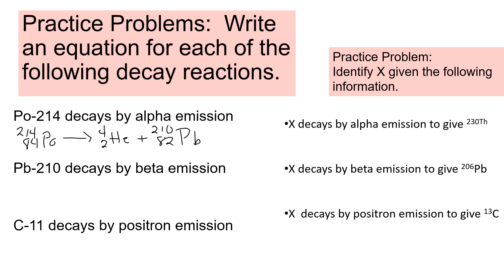Now Pb-210 is the parent and it decays by beta. Beta is 0 -1 electron. The bottom number: 83 minus 1 is 82, so the daughter's bottom number is 83. The top number stays 210. Element number 83 is bismuth, Bi.